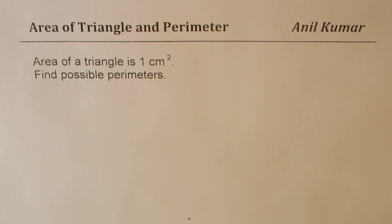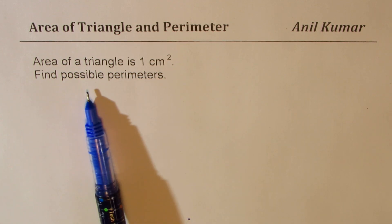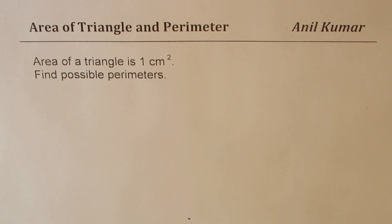The question is: area of a triangle is one centimeter square, find possible perimeters of the triangle. For a junior middle school student, it becomes very difficult to answer this question.